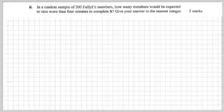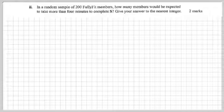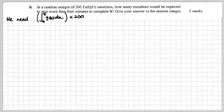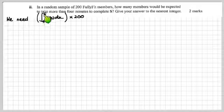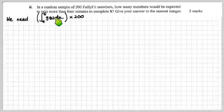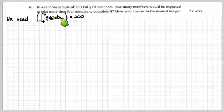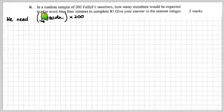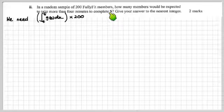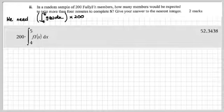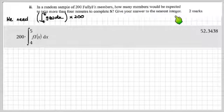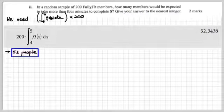Next bit, in a random sample of 200 fully fit members, how many members would be expected to take more than 4 minutes to complete S? Give your answer to the nearest integer. Well that's just basically an area under the graph thing, area under the graph of the probability density function, so it's from 4 to 5 we're looking for. That's the probability that one person will be expected to take more than 4 minutes to complete S, and then we've got 200 people, we multiply it by 200. It's a two mark question, that's our set up statement, there's our CAS, and we get this. Going back to the question, give your answer to the nearest integer, yeah 52. 52 people, there's your answer.